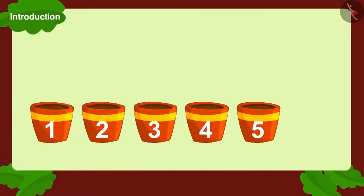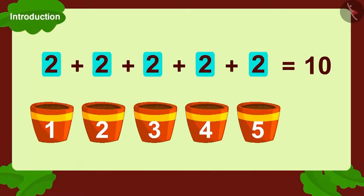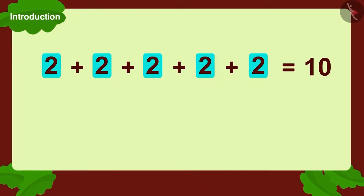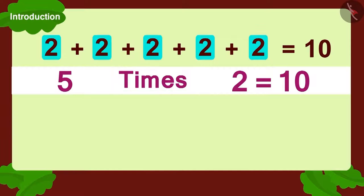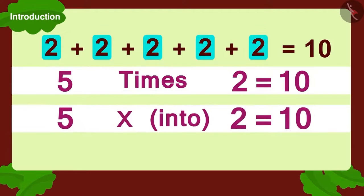Each pot has two seeds and there are five such pots. We can write it as five times two, or we can also write it as five multiplied with two.